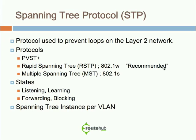PVST gave a lot of issues because its convergence is very slow — around 45 seconds for layer 2 changes to occur as Spanning Tree goes through its states of listening, learning, forwarding, and blocking. The recommended protocol is Rapid Spanning Tree, or RSTP, also known as 802.1W. A helpful way to remember it: the W means it's a winner. It brings convergence time down from 45 seconds to roughly 800 milliseconds.